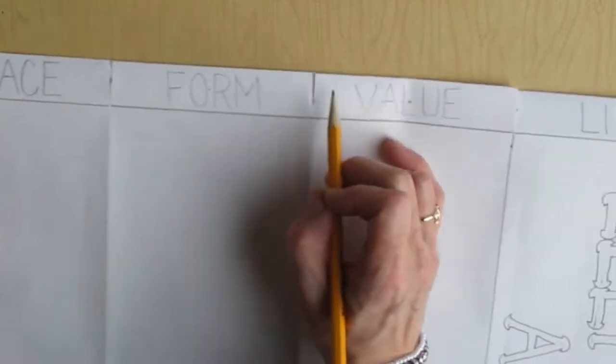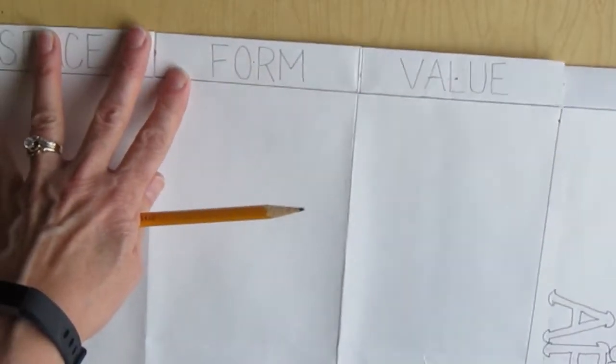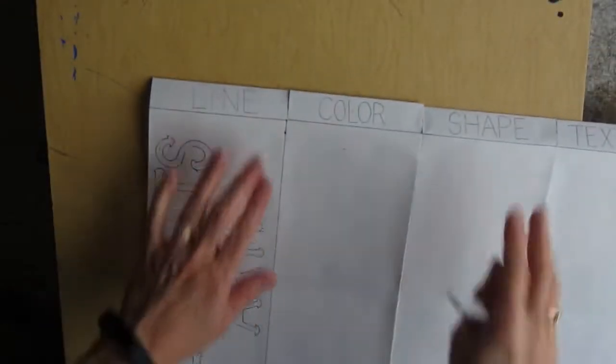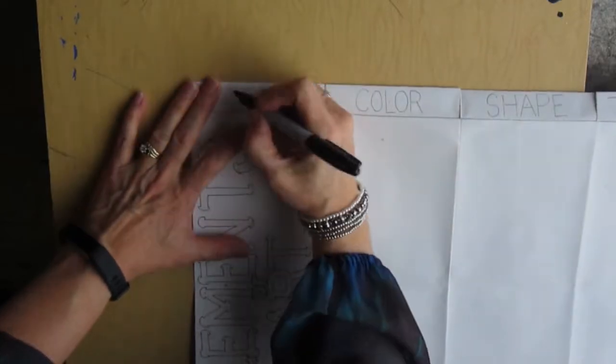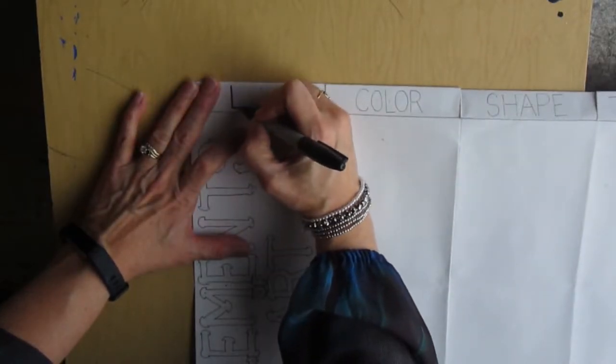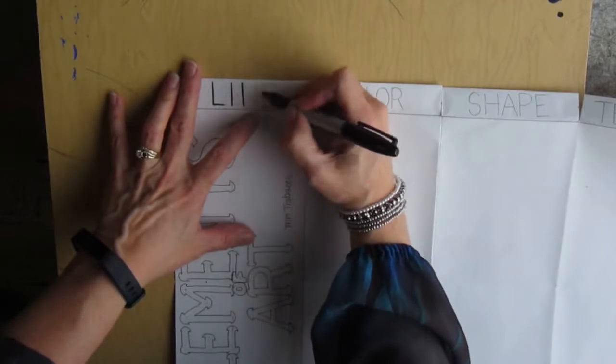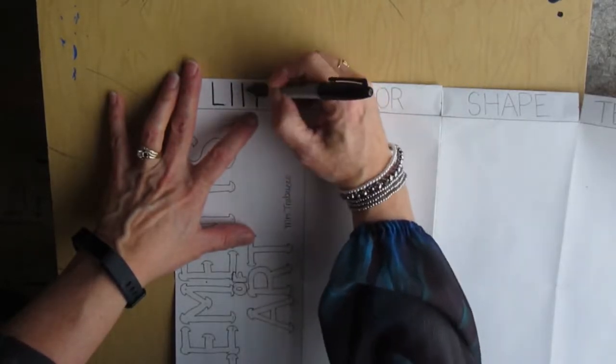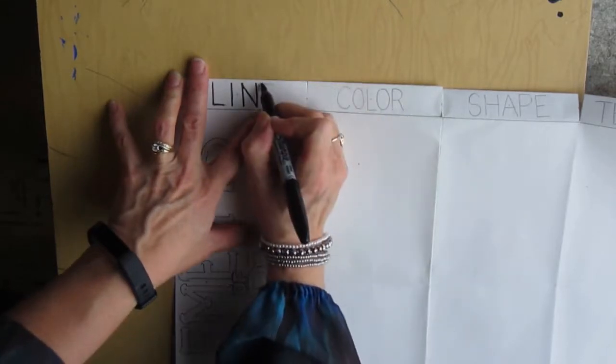Then the very last step is to take your fine tip Sharpie marker and with a nice smooth line go over all of your labels for the different elements. If you're done and there's any pencil showing, just erase the pencil completely away.